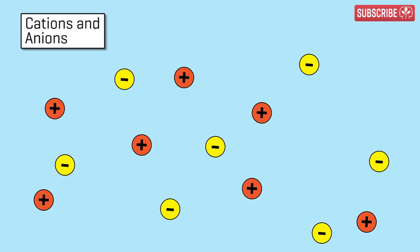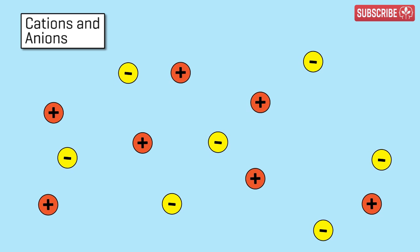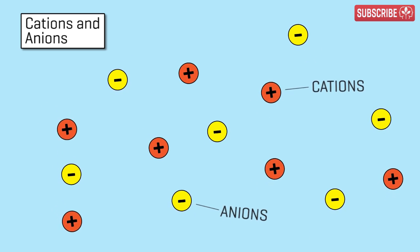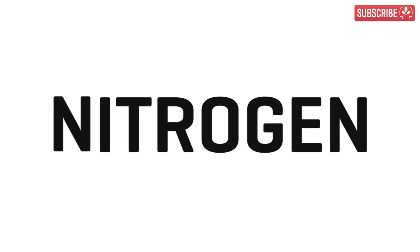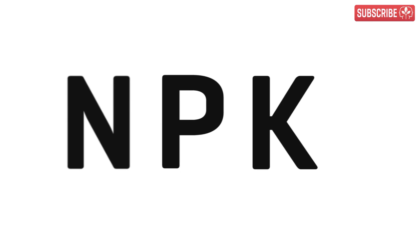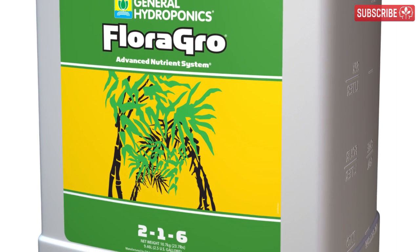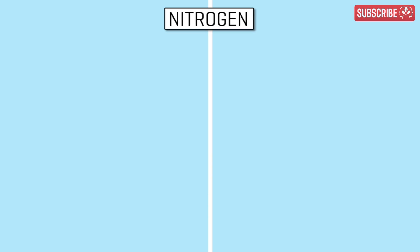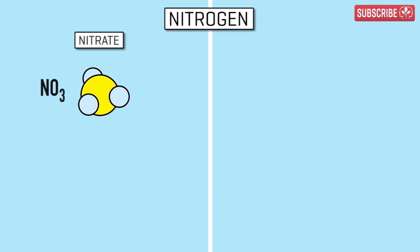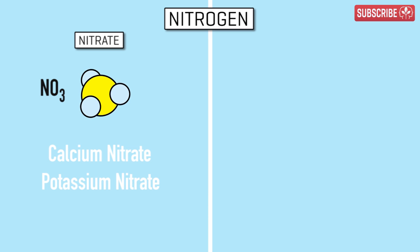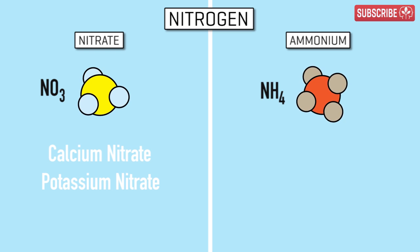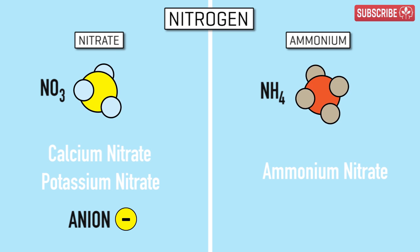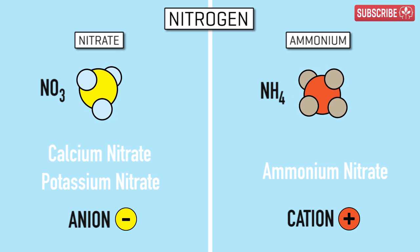A nutrient solution is made up of various ions dissolved in the water. Positive ions are called cations; negative ions are called anions. You already know that nitrogen is an essential element for plants — it's the N in your NPK after all. In hydroponics, we can supply nitrogen in the form of nitrate (NO3), such as calcium or potassium nitrate, or ammonium (NH4), such as ammonium nitrate. Nitrate is an anion — negatively charged — whereas ammonium is a cation, or positively charged.